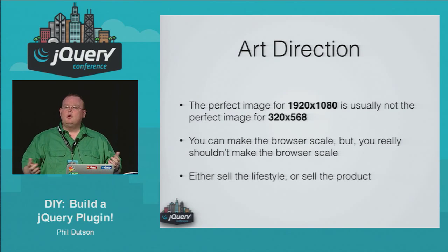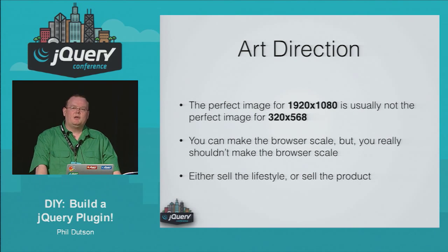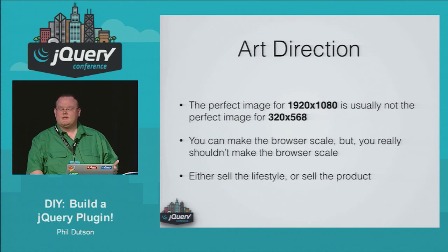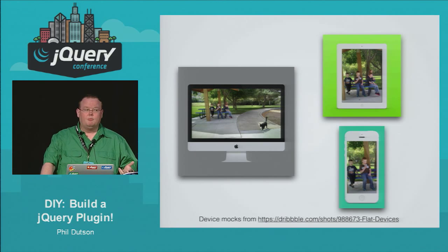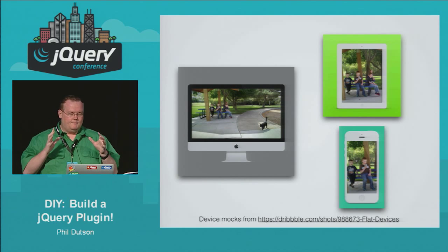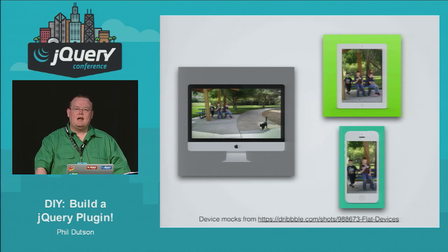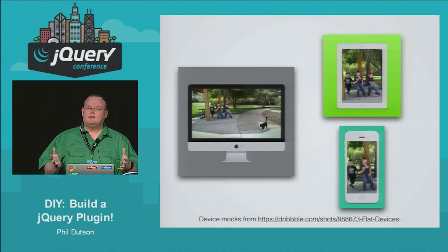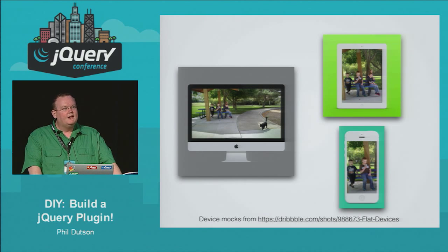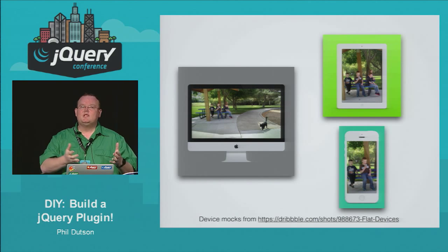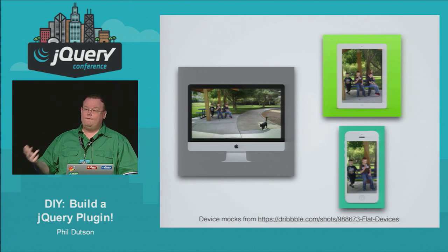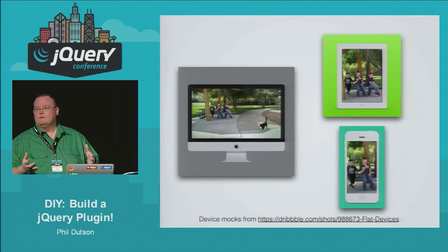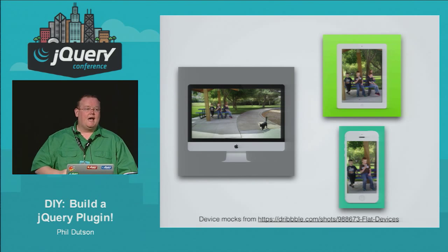You could force the browser to scale that image — we're going to talk about why that's not the greatest idea — which leaves you with either selling the lifestyle or selling the product or service. Here we see three images, three devices: a computer, a tablet, and a phone. There's a picture at a park with four kids watching a cat. On the tablet, the cat is gone — I'm just focusing on the kids, which is more important than cement and a cat. And on the phone, because I cannot show all four kids anymore at any level of decent detail, I've just picked two of them. So there is an example of art direction.